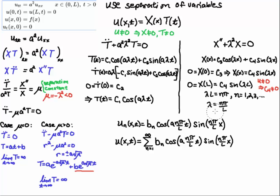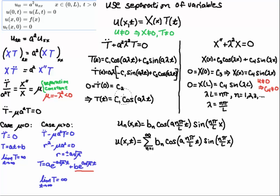I combine T(t) with X(x). Since only c4 survived and lambda = nπ/L, X(x) = c4 sine(nπx/L). Multiplying T(t) by X(x) gives a product of cosine(nπat/L) and sine(nπx/L). The constants c4 and c1 combine into a new constant, and I have these solutions for every n = 1, 2, 3, ... to infinity.